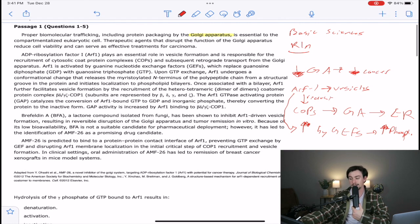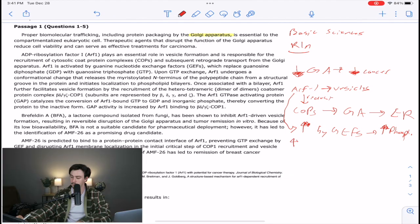It says upon GTP exchange, ARF1 undergoes a conformational change that releases the myristolated N-terminus of the polypeptide chain from a structural group in the protein and initializes localization to the phospholipid layers. All I really care about is that when we have this GTP shift, when we have this GTP exchange, then we are localizing these proteins to the phospholipid bilayer. So I'm going to say a change in GTP is going to lead to increased phospholipid localization.